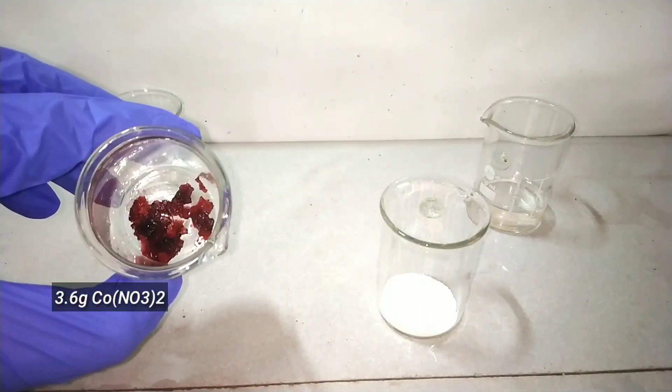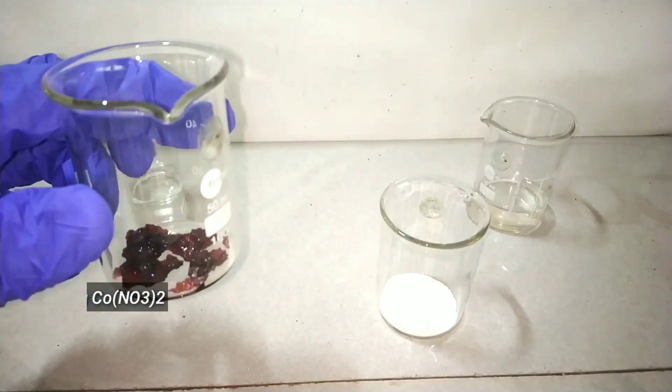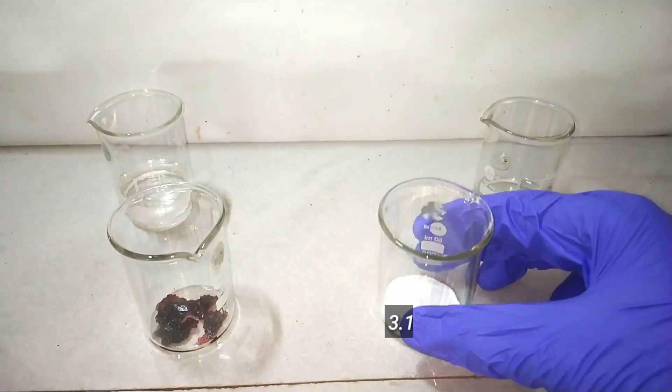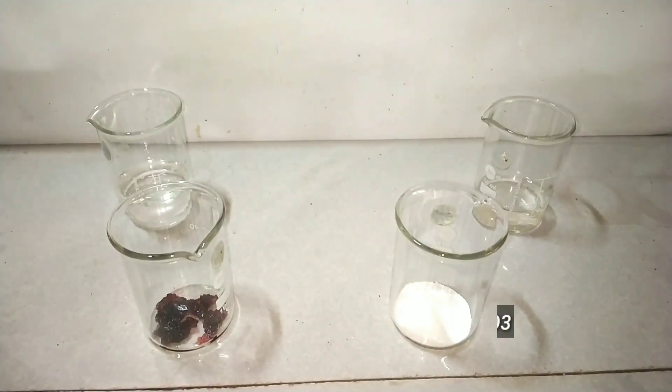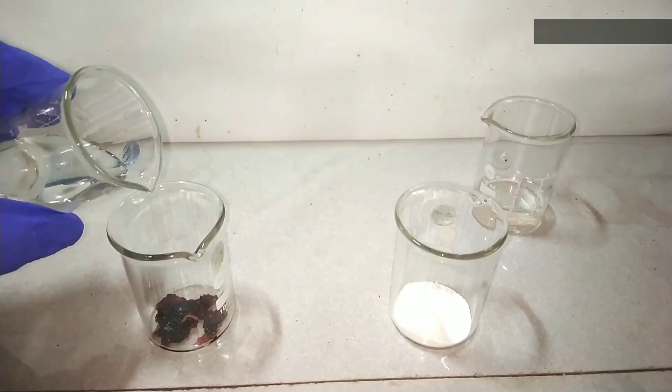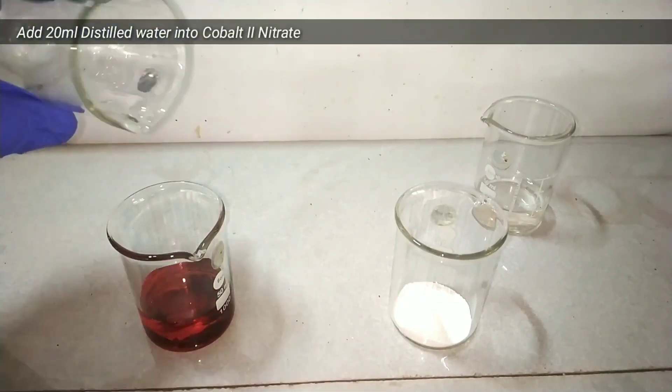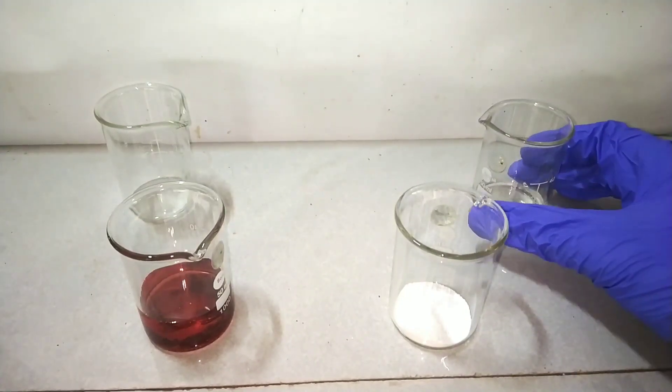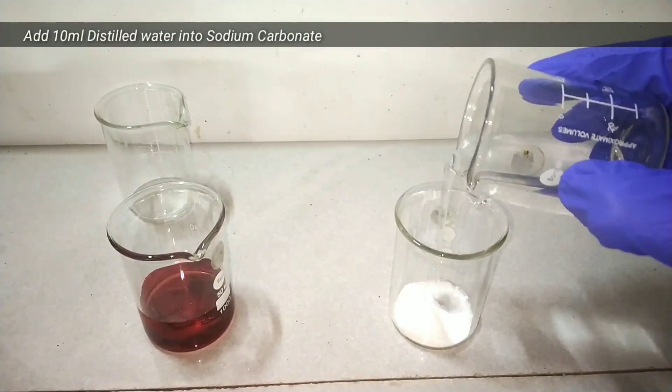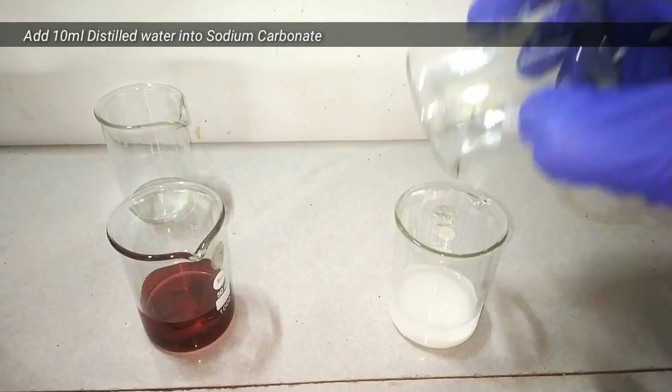First of all let us prepare some cobalt carbonate. For that I have taken 3.6 grams of cobalt nitrate and 3.18 grams of sodium carbonate. Now I add 20 ml of distilled water into the cobalt 2 nitrate and 10 ml of distilled water into the sodium carbonate.